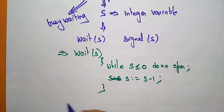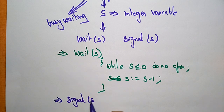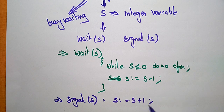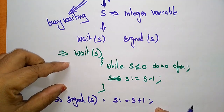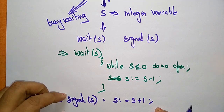Next, coming to signal — the next atomic operation used by the semaphore variable. Signal(S) indicates: S equals S plus 1. So wait performs a decrement operation and signal performs an increment operation.